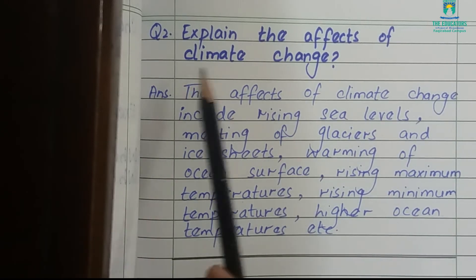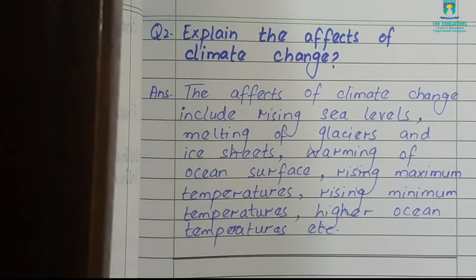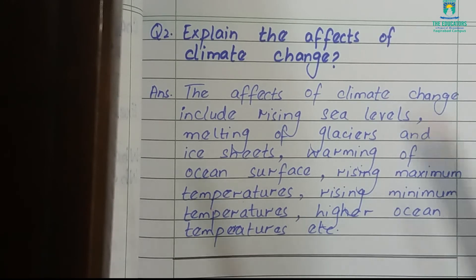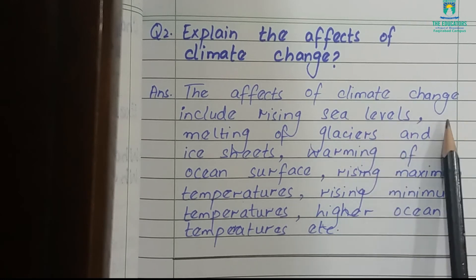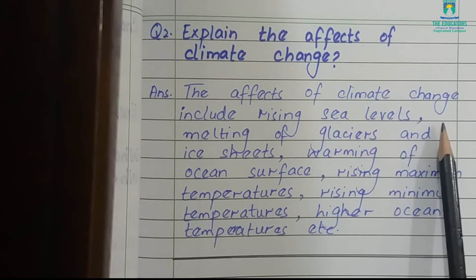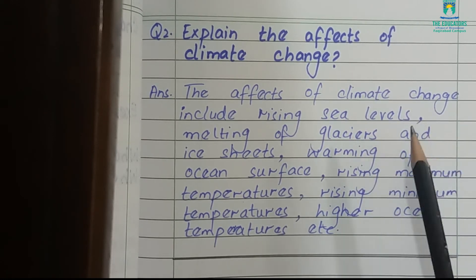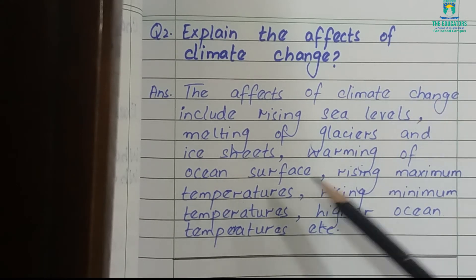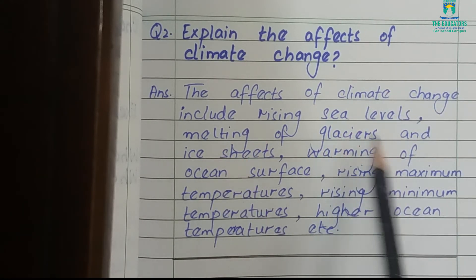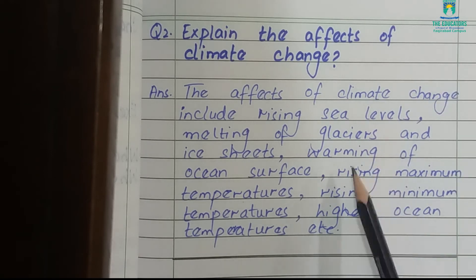The next question is: explain the effects of climatic change — how this change in climate can affect us or our environment. The effects of climatic change include rising sea levels. When glaciers melt, the water goes into the sea and the sea level rises. Another effect is the melting of glaciers and ice sheets.